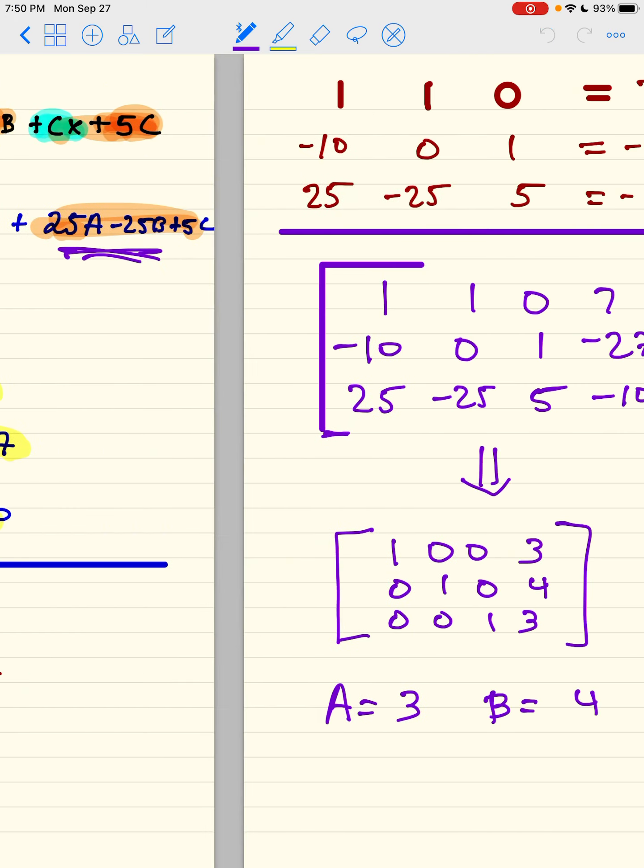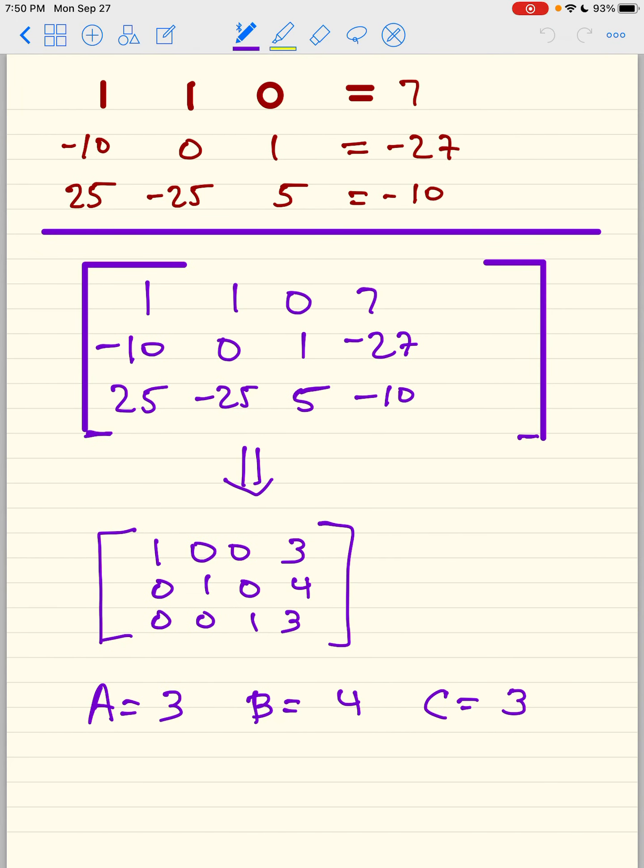Now, I know that we did this a lot, so I'm going to allow you guys to use a calculator. And we're going to put this into our graphing calculator under matrix. And we are going to use the row reduced echelon form, or reduced row echelon form. And we're going to get this.